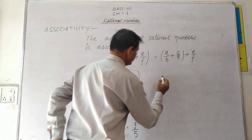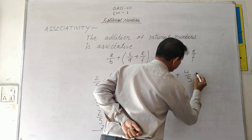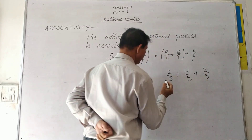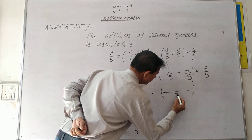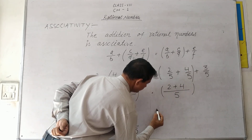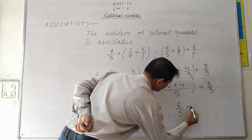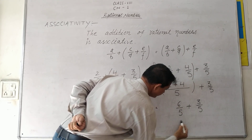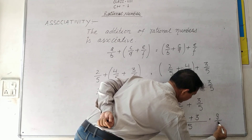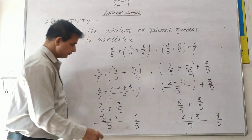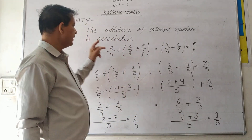Second arrangement: take the same numbers 2 upon 5, 4 upon 5, and 3 upon 5, but now add 2 upon 5 plus 4 upon 5 first. LCM equals 5, 2 plus 4 equals 6 upon 5. Then 6 upon 5 plus 3 upon 5 — LCM equals 5, so 6 plus 3 equals 9 upon 5. Both arrangements give 9 upon 5, confirming the associative property.